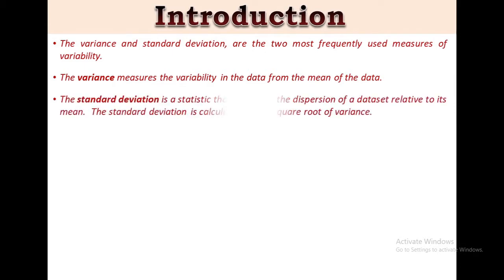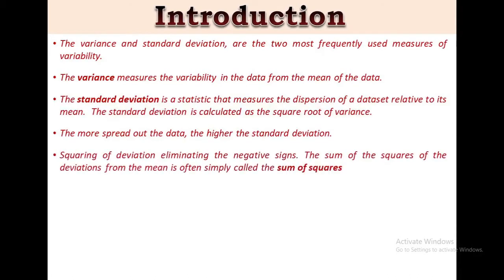The standard deviation is a statistic that measures the dispersion of a data set relative to its mean. It is calculated as the square root of variance by determining each data point's deviation relative to the mean. If data points are further from the mean, there is higher deviation within the data set. Thus, the more spread out the data, the higher the standard deviation. Squaring of deviations in variance and standard deviation eliminates the negative sign, which is the main drawback of mean deviation. The sum of the squares of deviation from the mean is often simply called sum of squares.